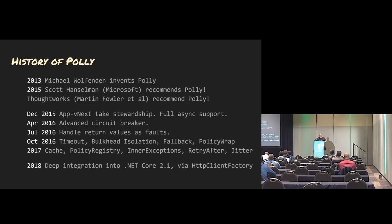Here's the history. In 2013, Michael Wolfenden invented Polly. In 2015, Scott Hanselman recommended it, and I did as well on .NET Rocks, and ThoughtWorks recommended it. December 2015, we took stewardship. We added full async support, and we just kept going with circuit breaker and return values. Then we added bulkhead isolation, the fallback, all these great features, and it keeps going today.